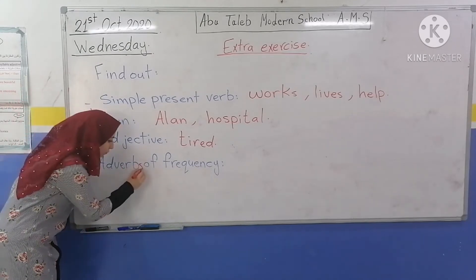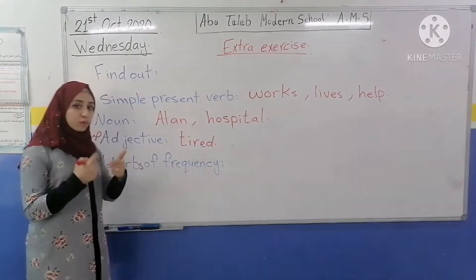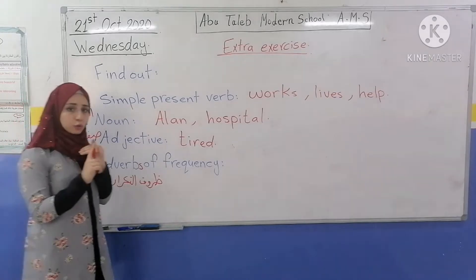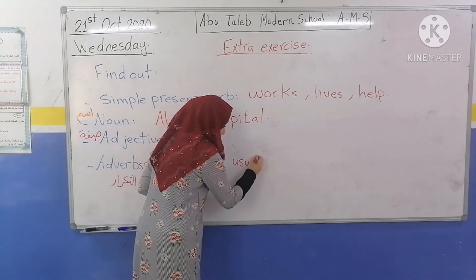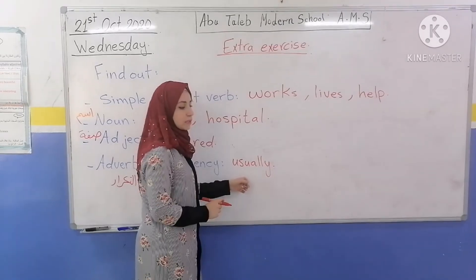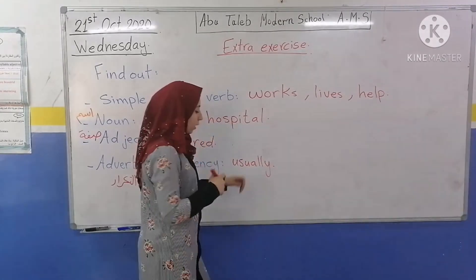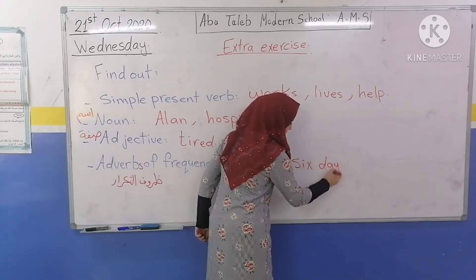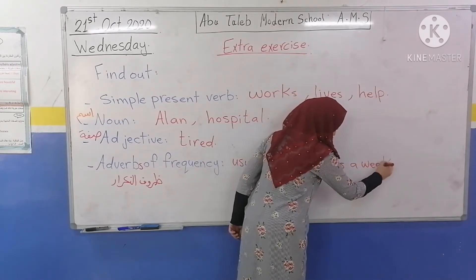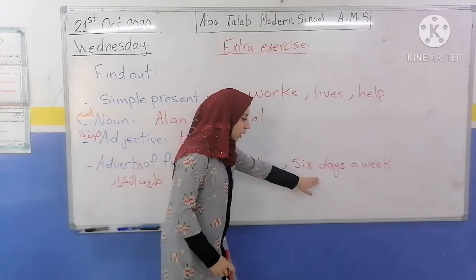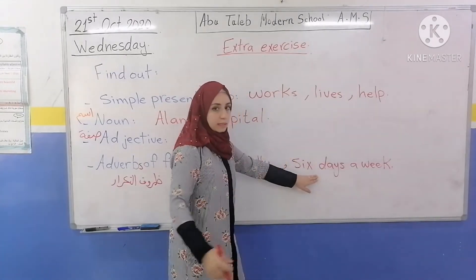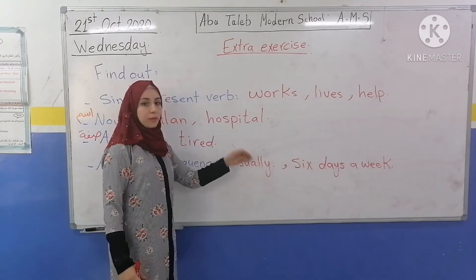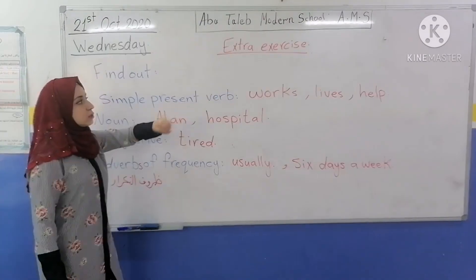Adverbs of frequency — ظروف التكرار — for example: usually. These adverbs come before the verb. We also have six days a week — this type of adverb comes at the end of the sentence. But usually, always, often, sometimes come before the verb. Please write these in your notebook.